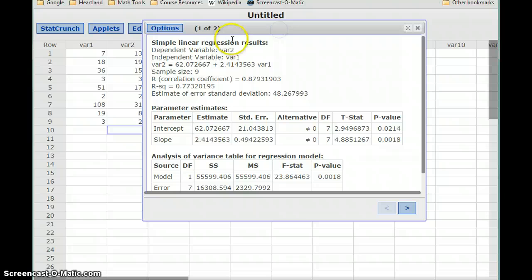This is going to generate a lot of information. For right now, all we're interested in is this line. That gives us variable 2, which is essentially our y value, equals 62.07. That's our slope,